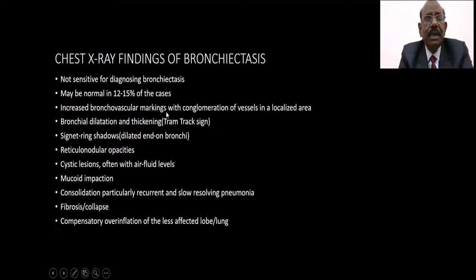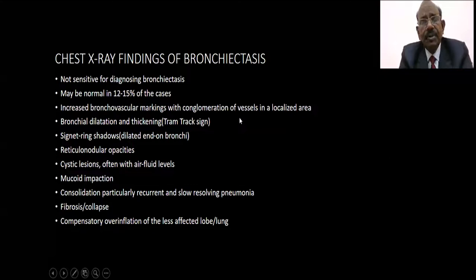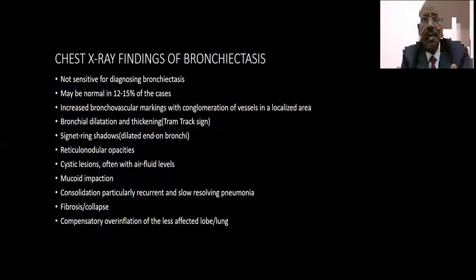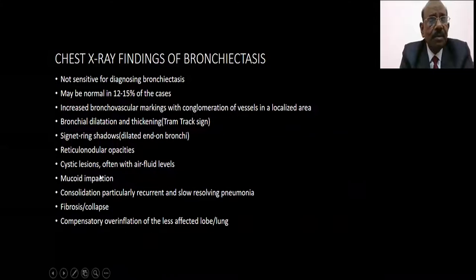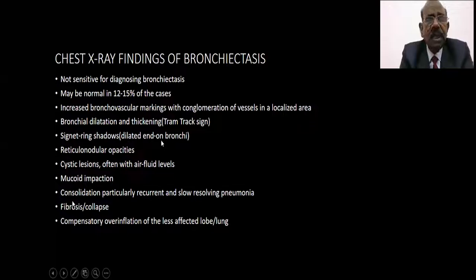The X-ray may be normal even when the patient has bronchiectasis on CT scan. Early changes include increased bronchial markings with crowding of those markings, particularly in a localized area. Bronchiectasis is usually a localized disease, though it may sometimes be generalized. You will find increased bronchial markings, dilated bronchi, thickened bronchi — what you also call tram tract signs — signet ring shadows, reticular nodular shadows, and sometimes cystic lesions with fluid levels, mucoid impactions, and evidence of consolidation.